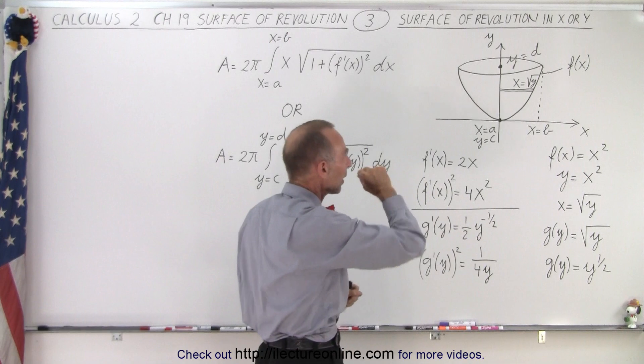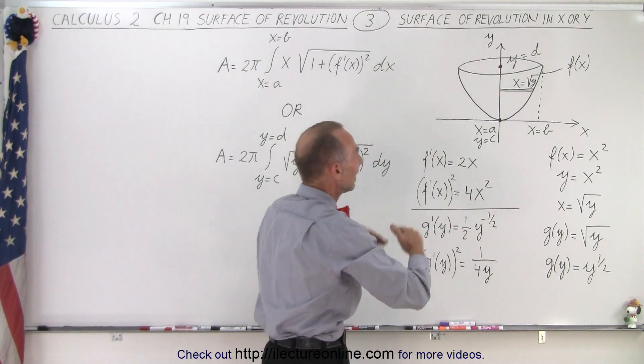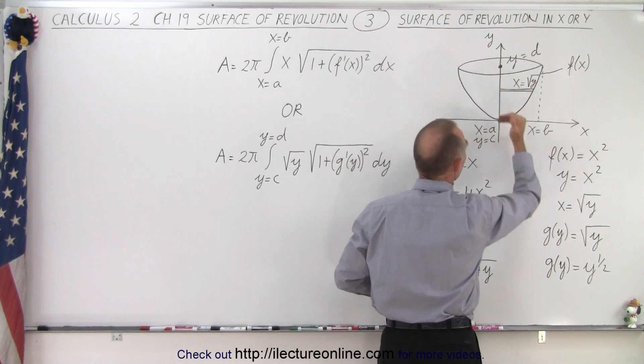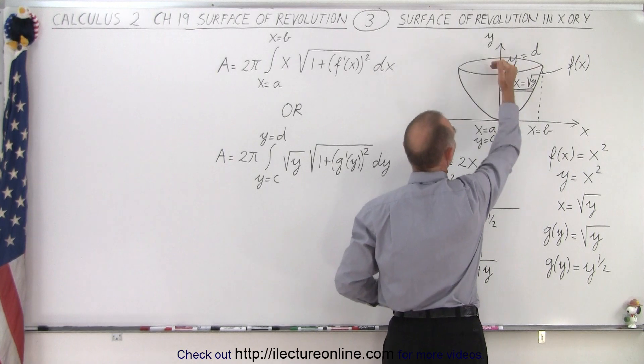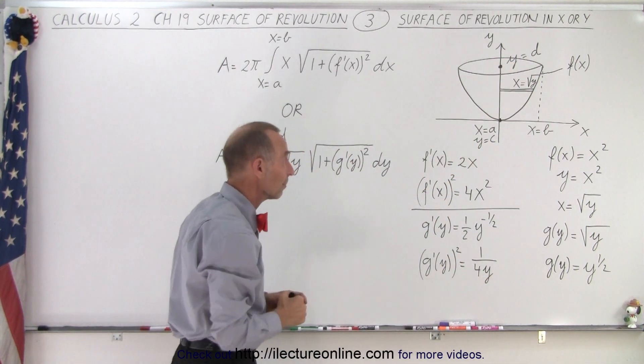And so when we wrap that around there, we get a small little segment on the surface of that shape, and then we integrate it. Either we integrate it from x equals a to x equals b, or from y equals c to y equals d. So there are two different ways in which you can solve that very same problem.